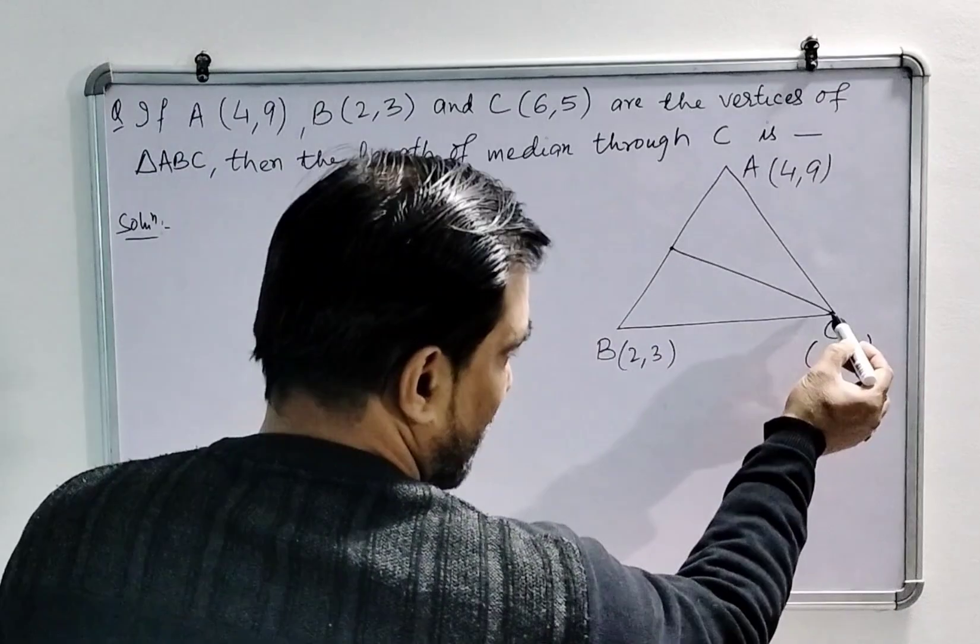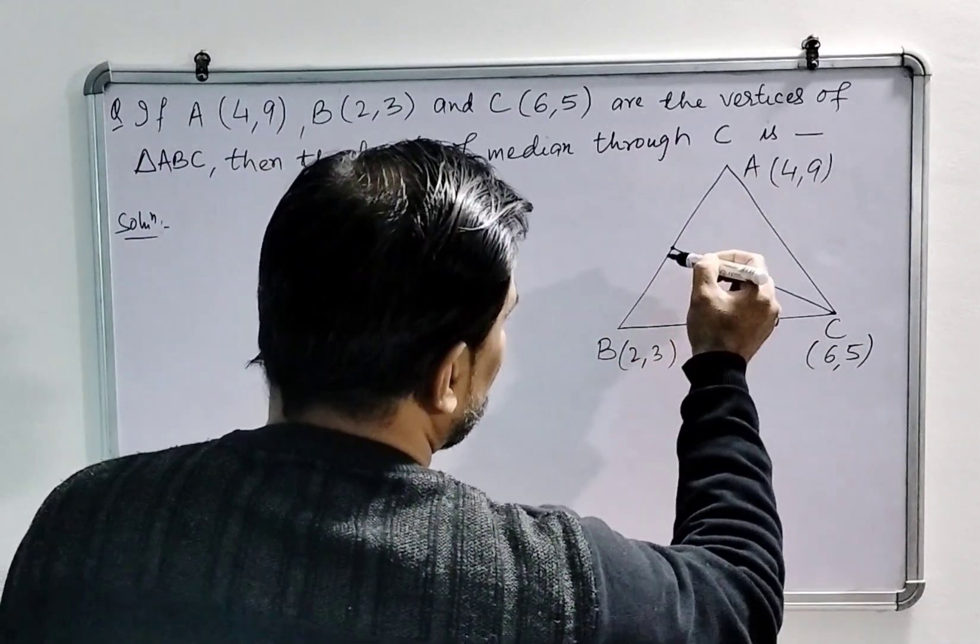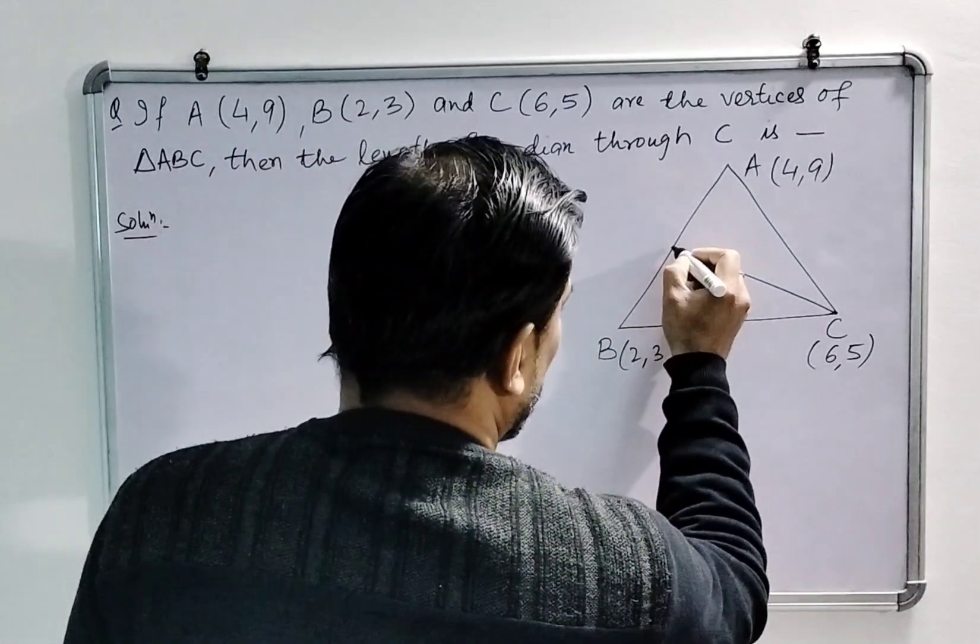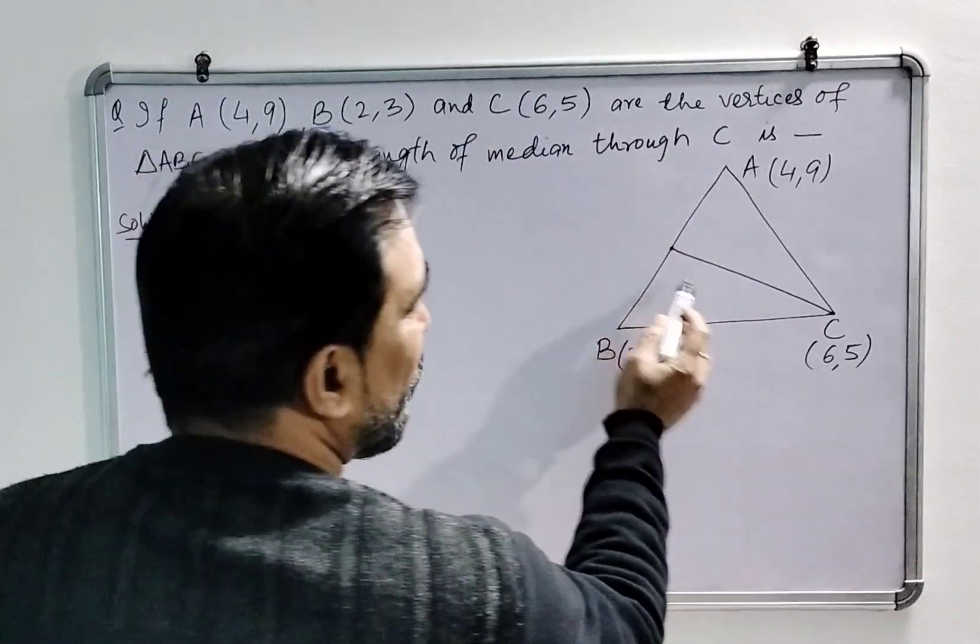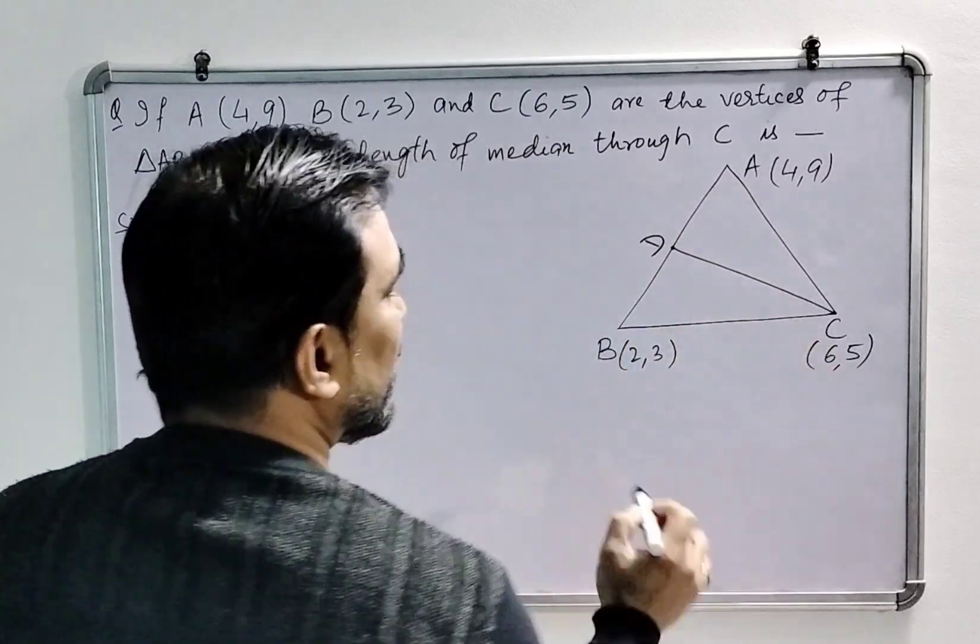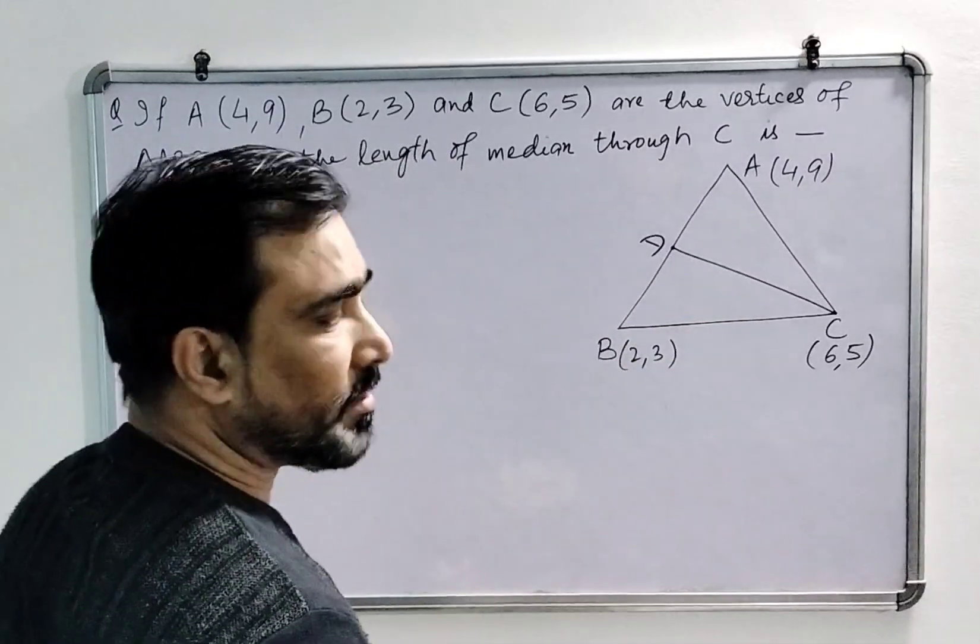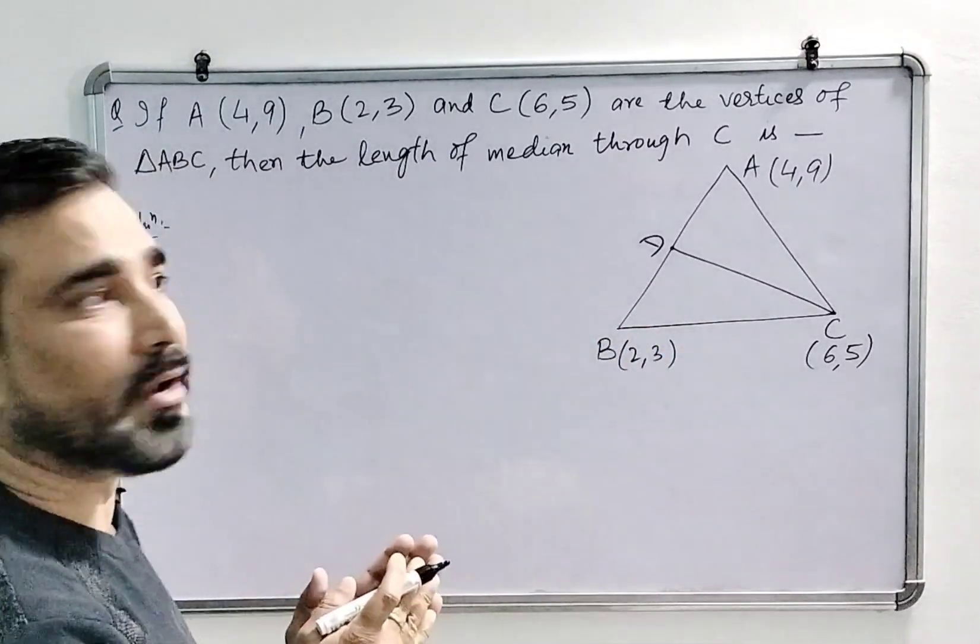So if you look here, the median which is drawn through point C will divide the opposite side in two equal parts. So if you want to find the length of, suppose this point is D, the length of CD that is median, we have to first find the coordinates of point D, then we can use a distance formula to find the length.